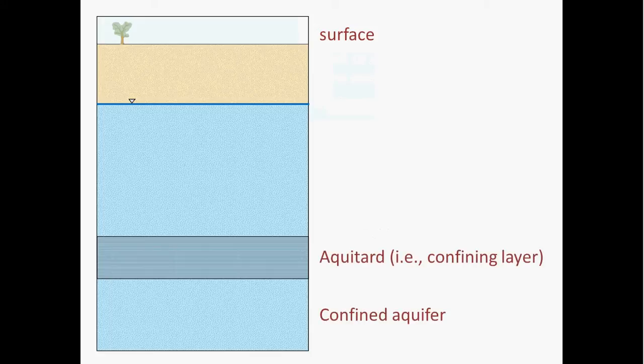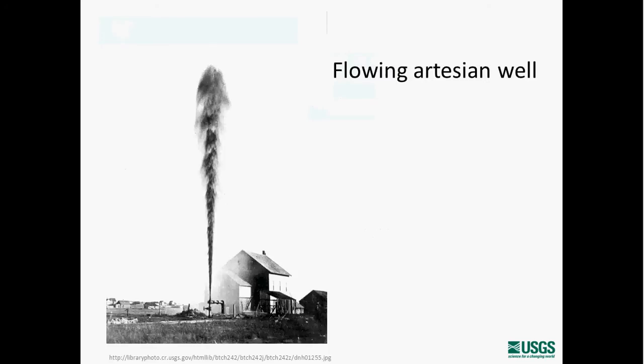Aquifers that exist below aquitards are referred to as confined aquifers. Essentially, the movement of water within the aquifer is confined by the aquitard. These aquifers can develop significant pressures as a result. In some cases, there's enough pressure so that when you drill a well into that confined aquifer, water can come shooting out of the well onto the surface. And those wells are called flowing artesian wells.